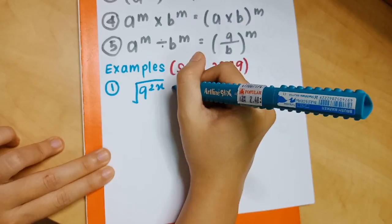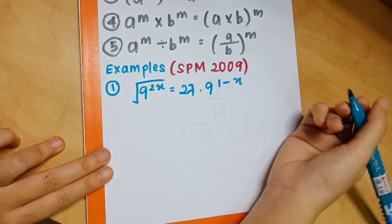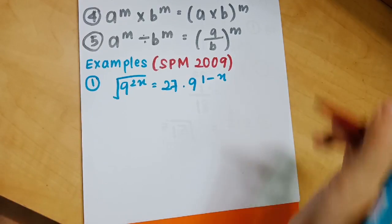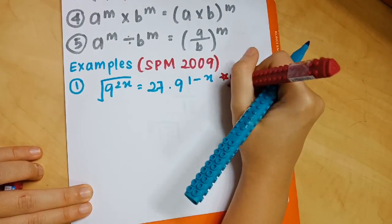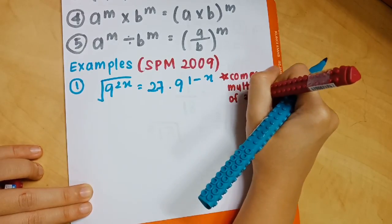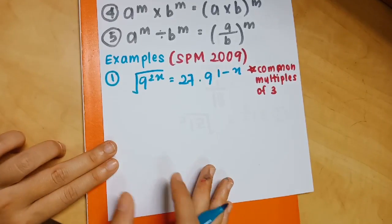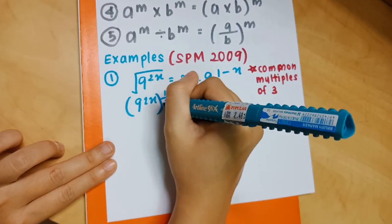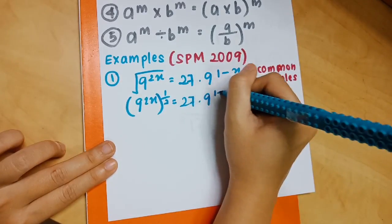When you come across an indices question, the first thing to do is identify the common base of all the numbers. Here the common base is 3, so you're going to change everything to base 3. First, remove the square root and change it to the power of 1 over 2, because that simplifies things.